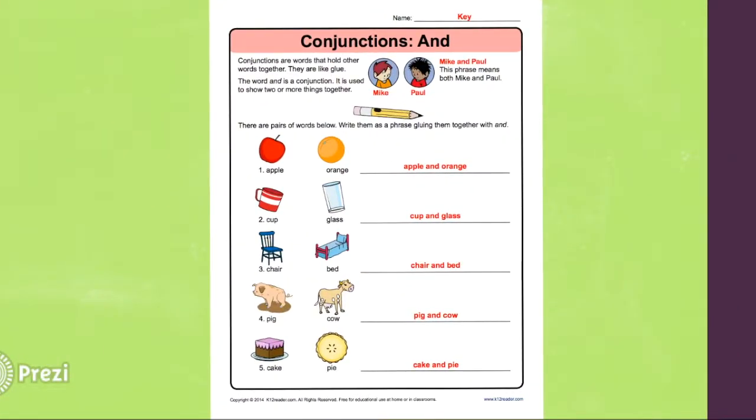All right. So for number one, we have apple orange. To combine these two subjects, we would say apple and orange. For number two, we have cup, glass. So you would say cup and glass.